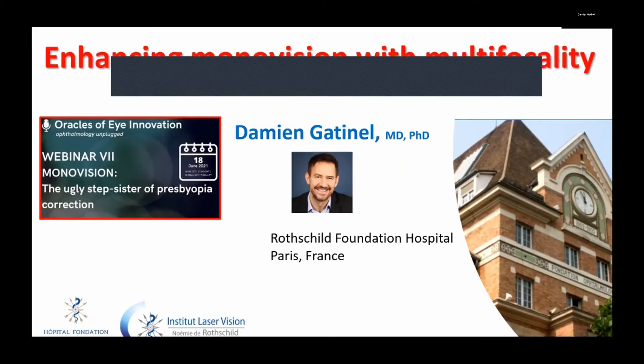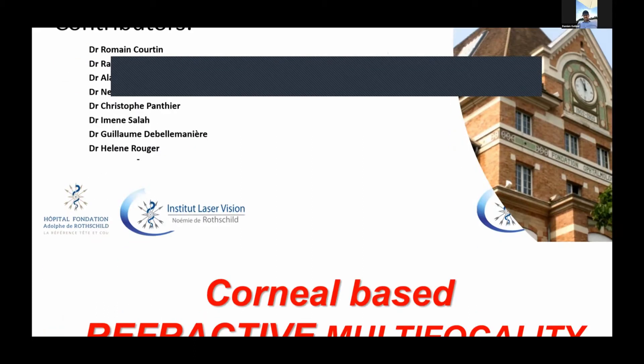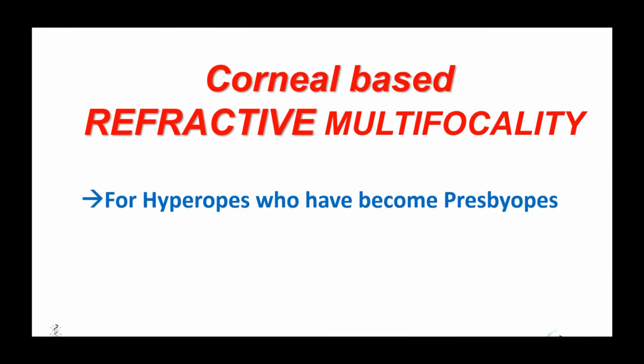I would first like to thank the Committee of Oracles of High Innovation for this invitation. Here is my financial interest. The combined correction for hyperopia and presbyopia is an elective indication for corneal multifocal correction surgery. Classic monovision is usually reserved for the surgery of presbyopic myopes. In this presentation we will see what separates but also brings together these two approaches.